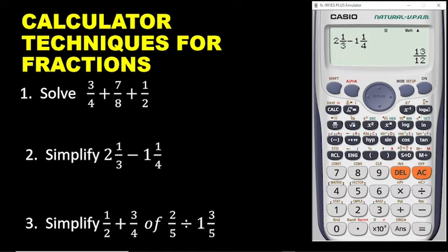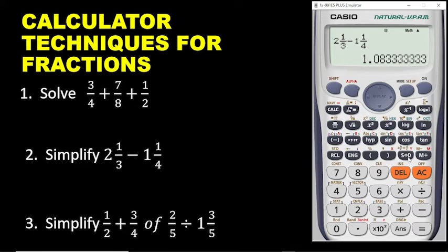And then you are getting your answer. This is a mixed number — actually an improper fraction, meaning the top number is bigger than the bottom one. If you want your answer to be in decimal, just press the SD. And if you want your answer to be in mixed numbers, you press shift and then you press SD. We are having it in mixed numbers. So that is how you can work with fractions any day, any time your work involves fractions.